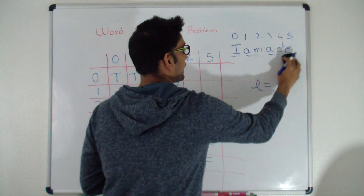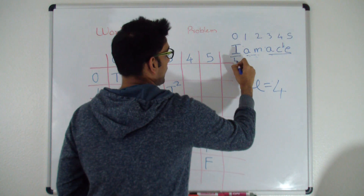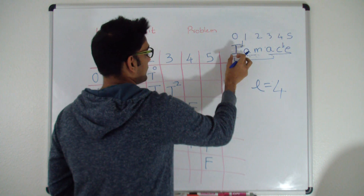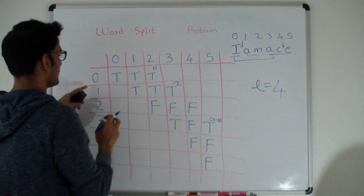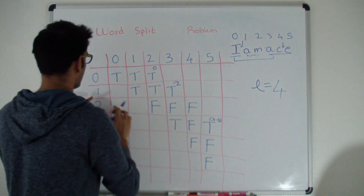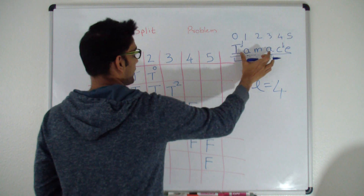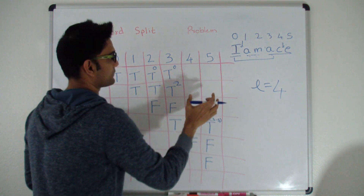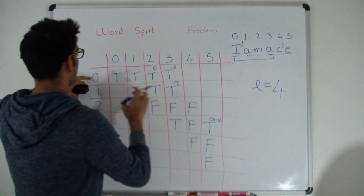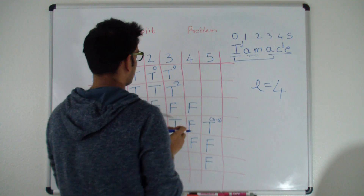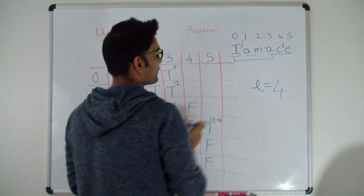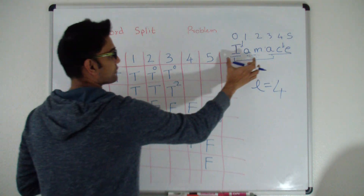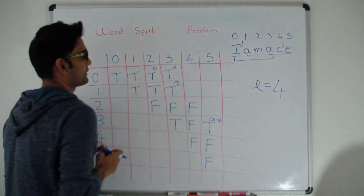Now L equals 4, looking at 4 characters at a time. For 'IAMA': not in the dictionary. We try splitting after I: (0,0) is true, and 'AMA' at (1,3) is also true. So IAMA can be split into valid words — (0,3) is true. The split point is at index 0, since I is in the dictionary and we know (1,3) is true from our earlier work.